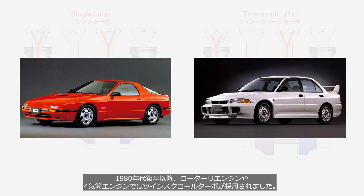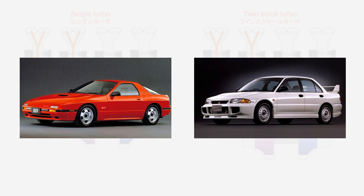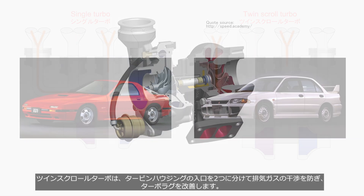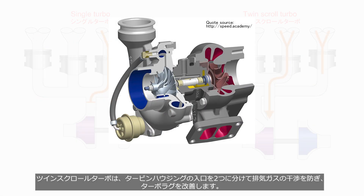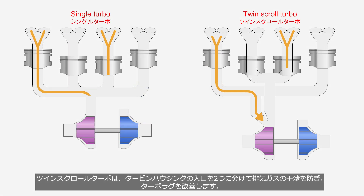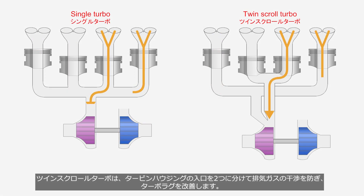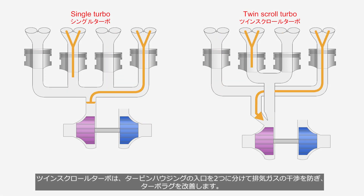Since the late 1980s, twin-scroll turbos have been adopted in rotary engines and four-cylinder engines. Twin-scroll turbo divides the inlet of the turbine housing into two, preventing exhaust gas interference and improving turbo lag.